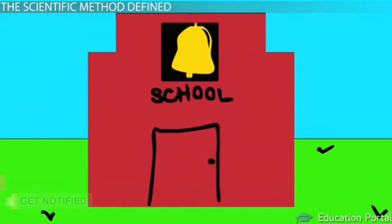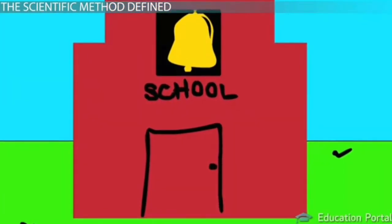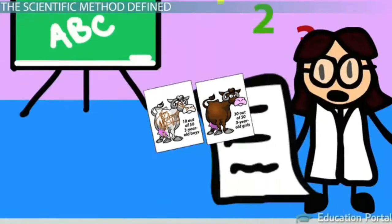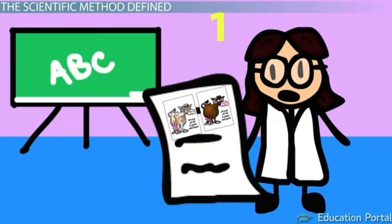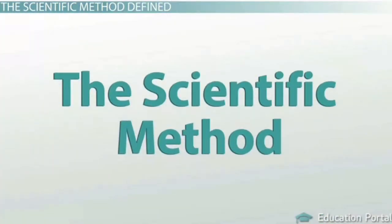She tested this idea by collecting coloring samples from three-year-old boys and girls at area preschools. 10 out of 53 three-year-old boys colored within the lines, and 30 out of 53 three-year-old girls colored within the lines. The researcher then wrote a report that outlined how the information she obtained supported her idea that three-year-old girls have better fine motor skills than three-year-old boys. This is an example of the use of the scientific method in human growth and development research.